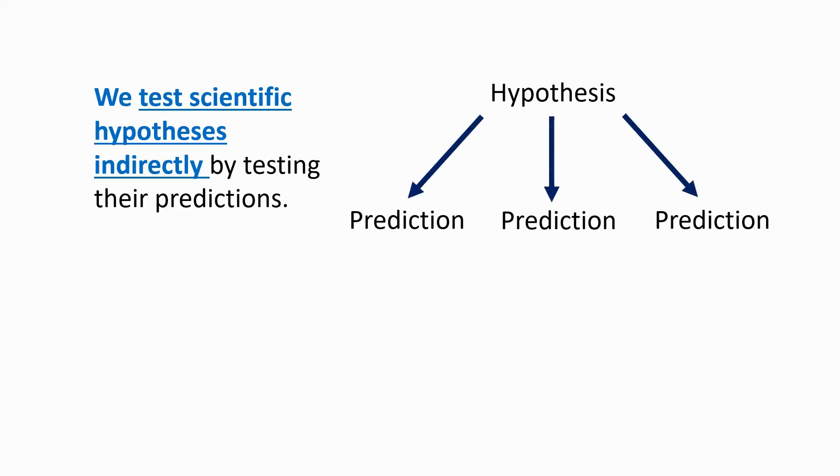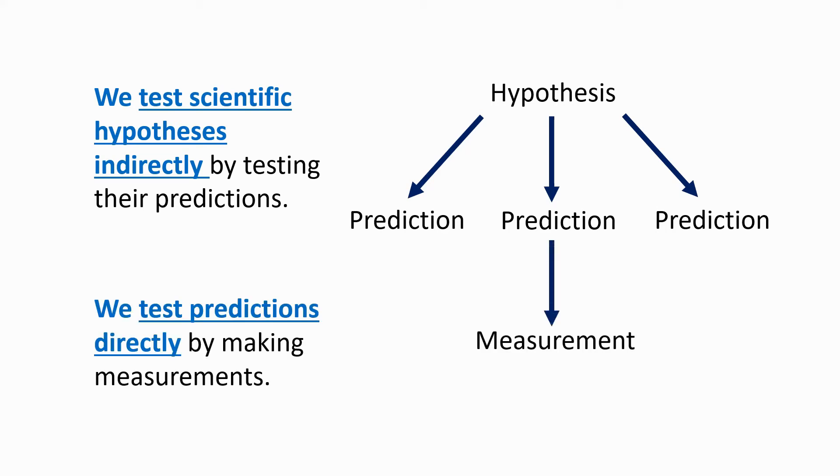This example illustrates a number of principles that are quite important. For example, any hypothesis makes a large number of predictions, and we test hypotheses indirectly by testing their predictions. And if any of the predictions is false, the hypothesis itself is false. We test a prediction directly, however, by making a measurement.